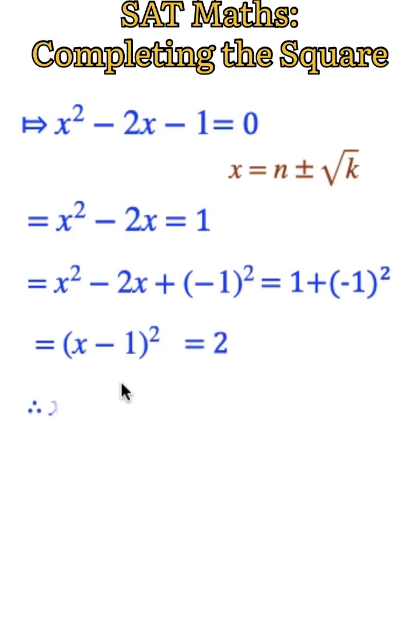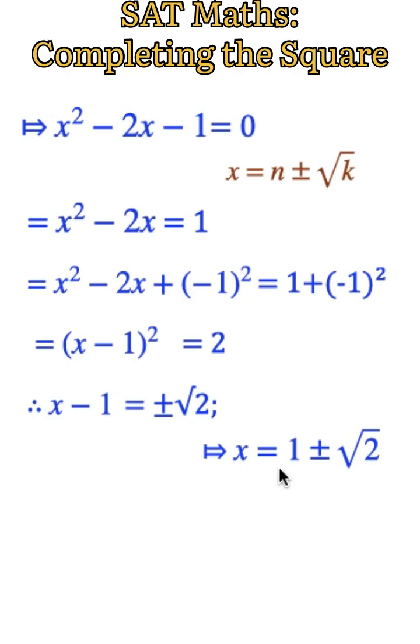Taking the square root of both sides, we have x minus 1 equals plus or minus square root of 2. Therefore x equals 1 plus or minus square root of 2.